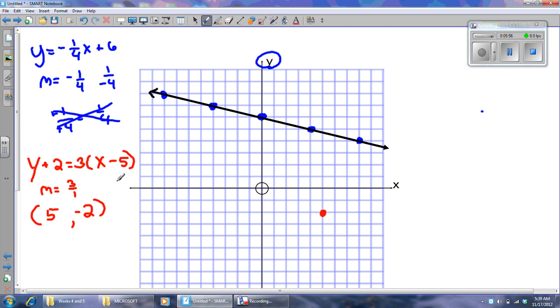Okay, my slope is 3 over 1. 1, 2, 3, 1. 1, 2, 3, 1. Of course, I could have gone down 1, 2, 3, and then back 1. Okay, I want you guys to be so successful on Tuesday.